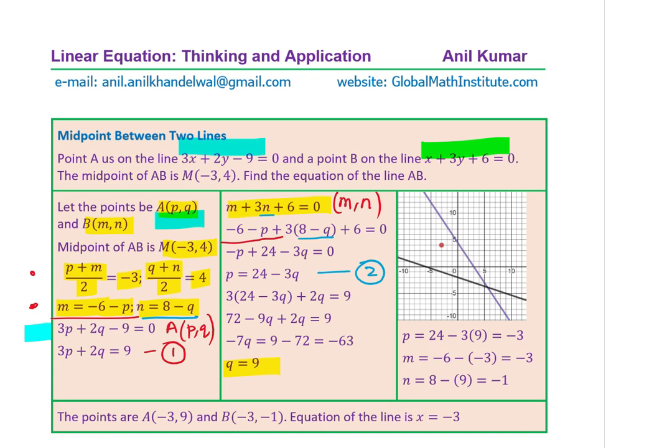Once you find the value of Q as 9, you can always find all other values related to it. We know N is 8 minus Q. And so N is 8 minus 9, which is -1. And we also found P is 24 minus 3Q. So 24 minus 3 times 9 gives me -3.